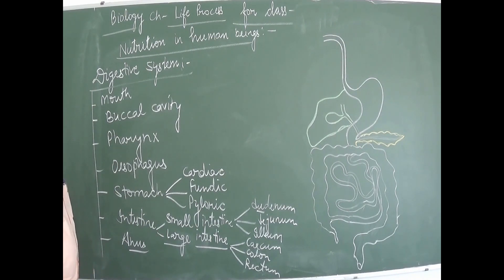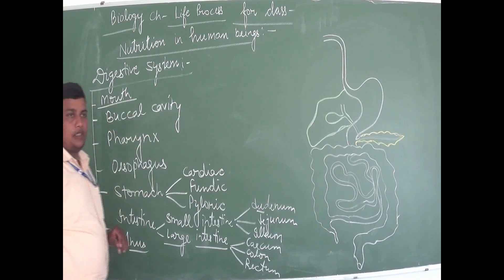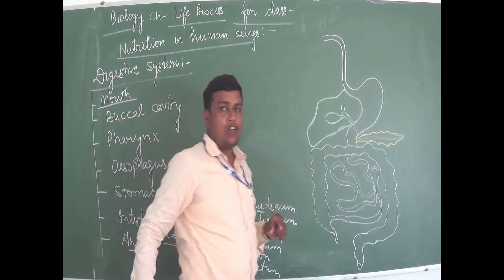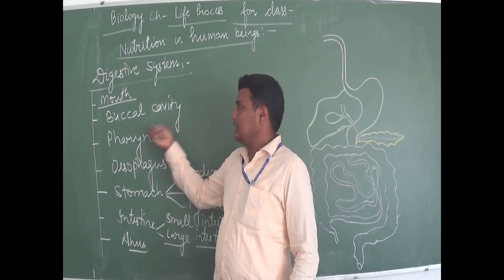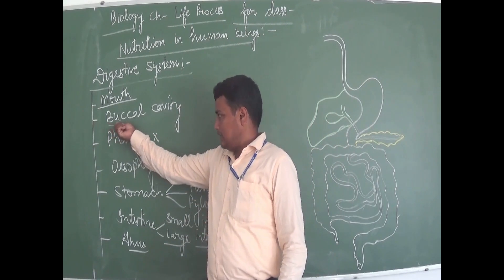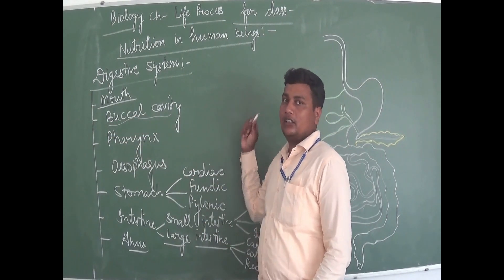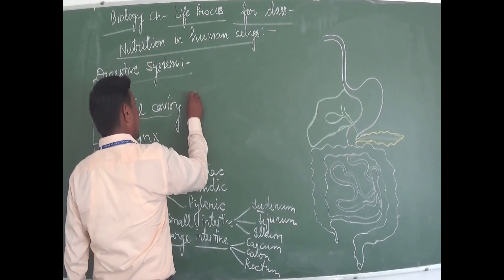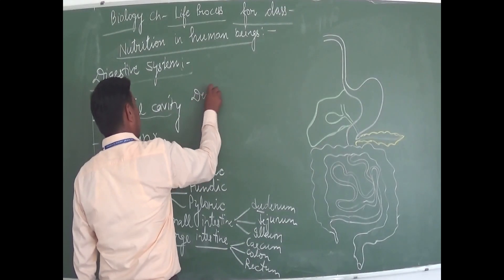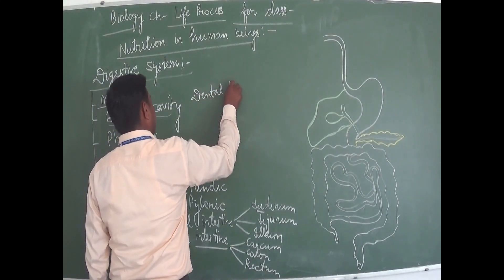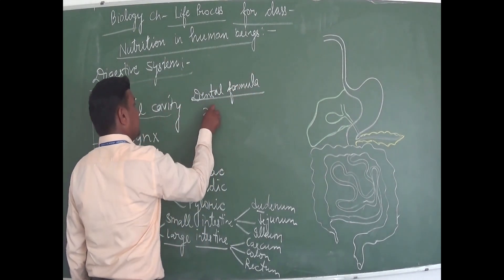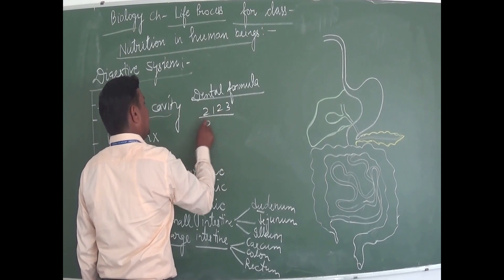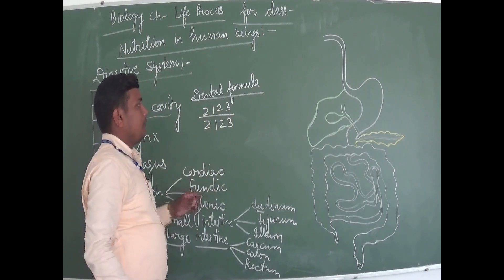The mouth is the opening between the upper and lower lips. The buccal cavity contains several teeth. There is a dental formula in human beings. The dental formula is 2-1-2-3 over 2-1-2-3, representing incisors, canines, premolars, and molars.